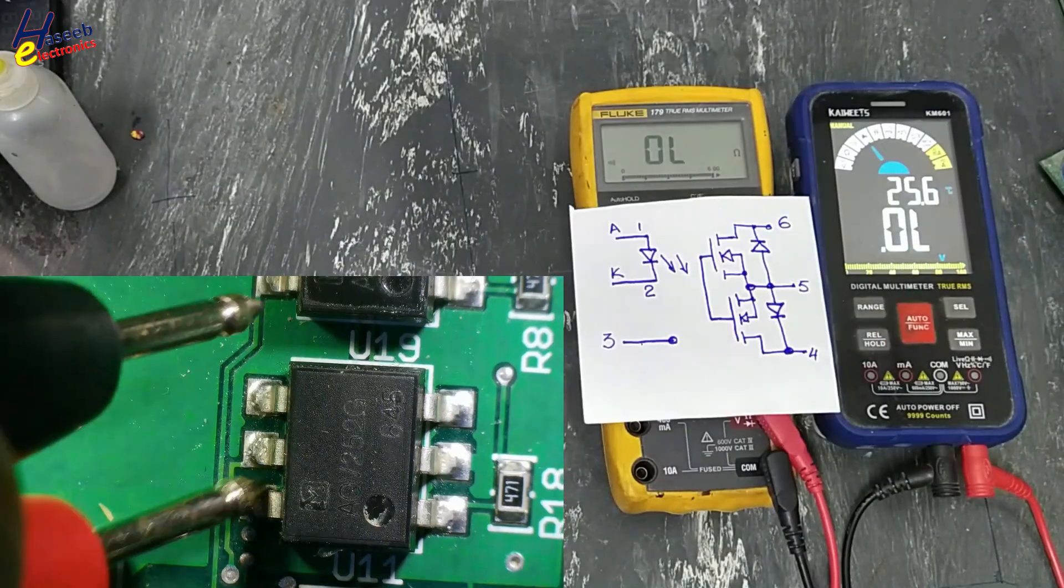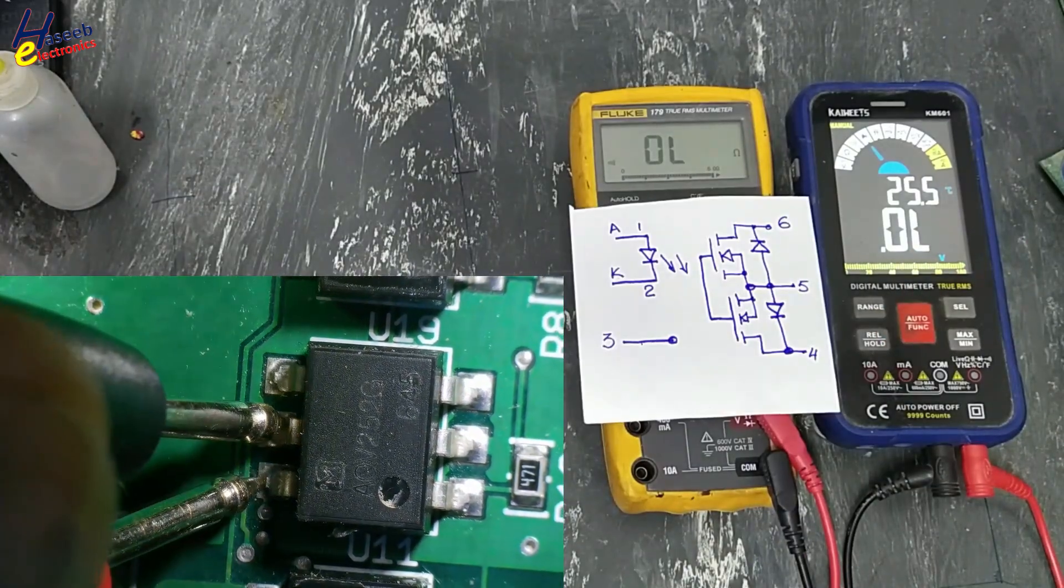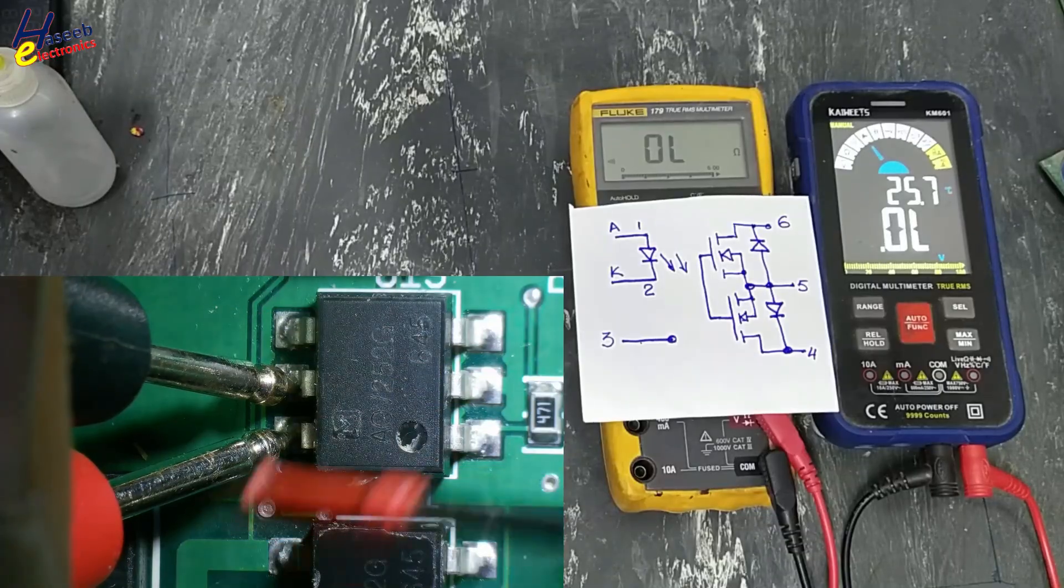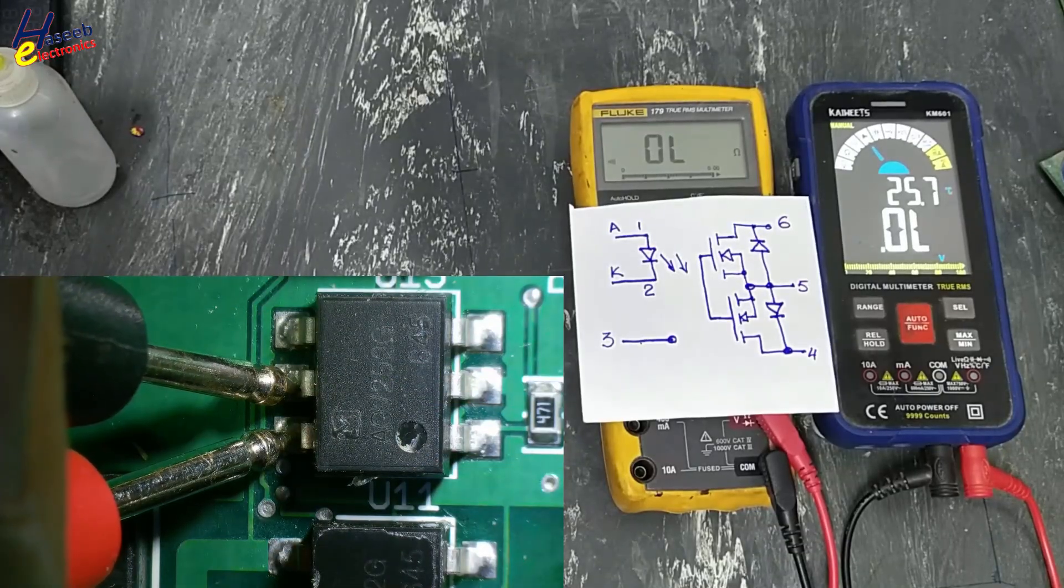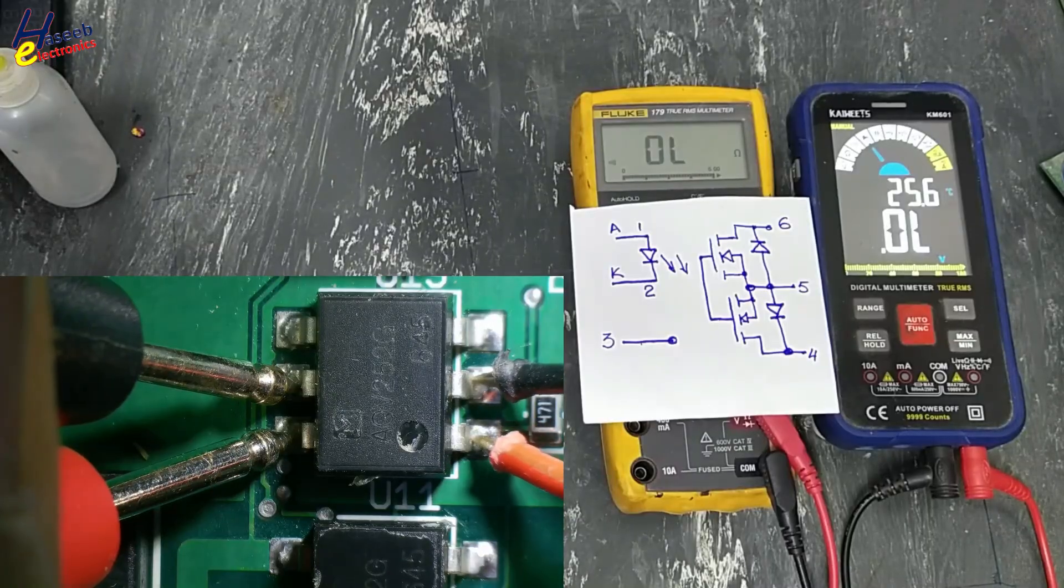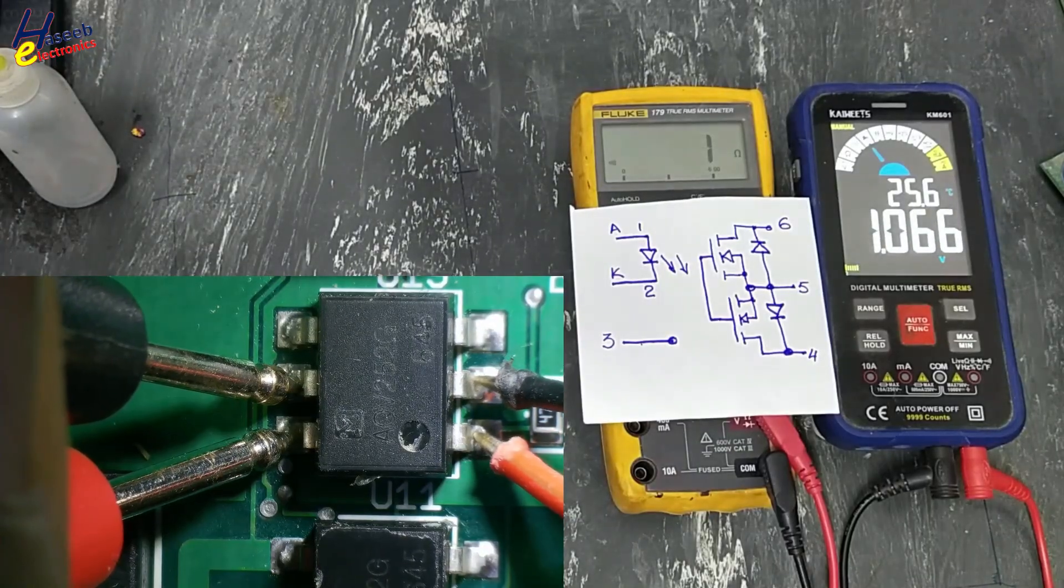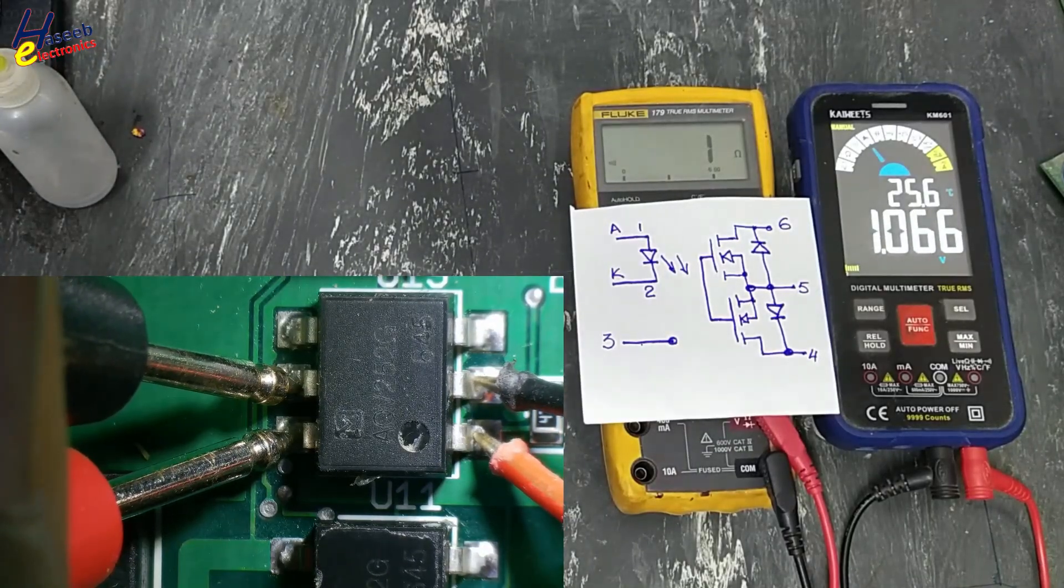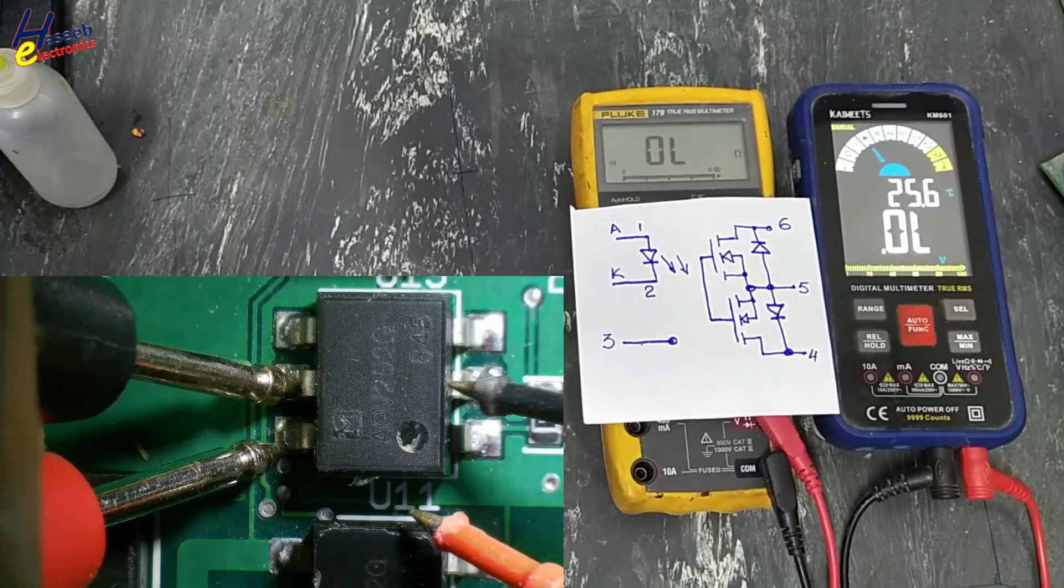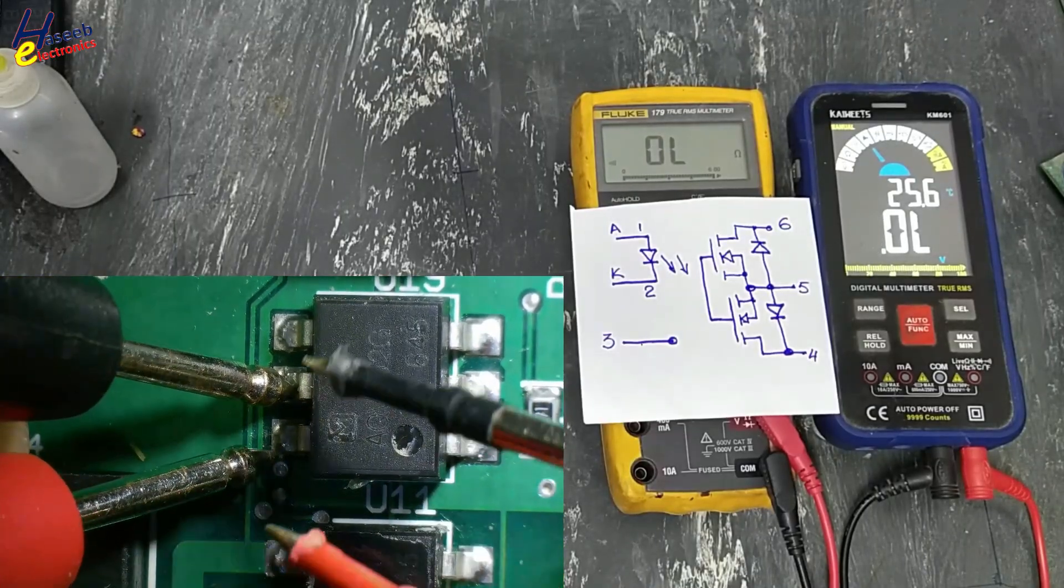Red lead at pin number six, black at pin number five. At the input side, when we provide biasing voltage to the LED, it turns on the output side switch, giving continuity. Yes, it is good.